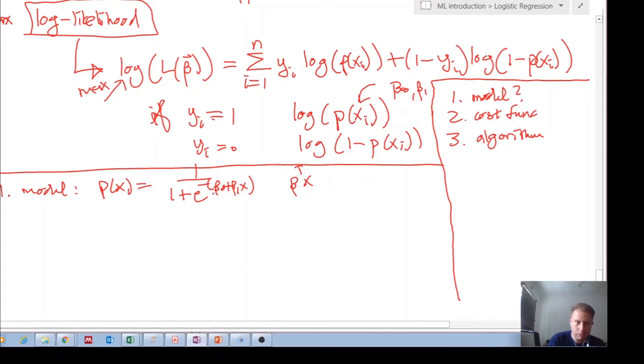But if you want to generalize it, this could become β transpose x, where x could be, you know, 10 input features, 100 input features. Okay, so this is the logistic function. So this is the model that we want to use on our data. So now there's our data like that and we want to fit that model. This is the model that we're trying to fit.